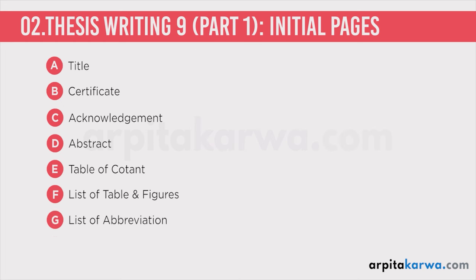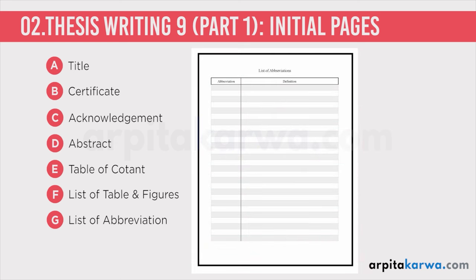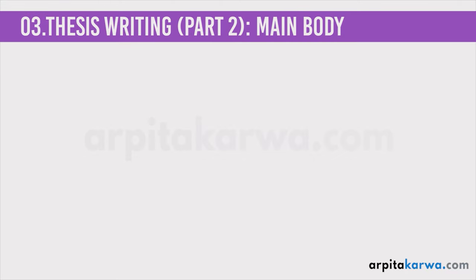Finally, among the initial pages, we have the list of abbreviations. All abbreviations used in the thesis are listed here along with their expanded forms — for example, 'i.e.' expanded to 'that is'. So in the initial pages you have: the title page, certificate, acknowledgement, abstract, table of contents, list of tables and figures, and list of abbreviations.